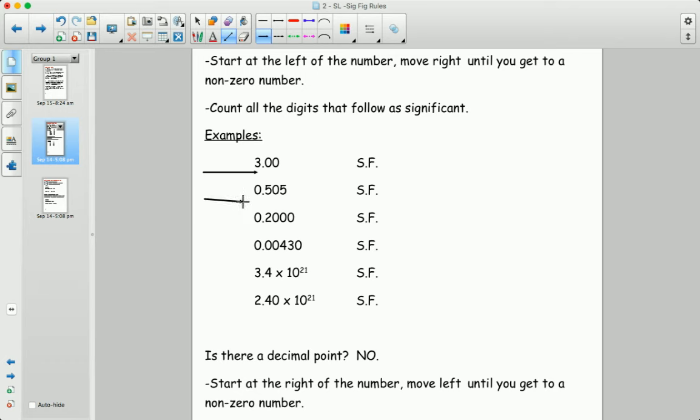For the next one when I move from the left I don't hit a non-zero number until I get to the five. So I only start counting when I get to this five and then I count one, two, three. This first zero is not significant. It's really just a placeholder. It gives me the magnitude of the number but it doesn't really matter that much. If I use scientific notation I could get rid of that number and still report the value with accuracy.